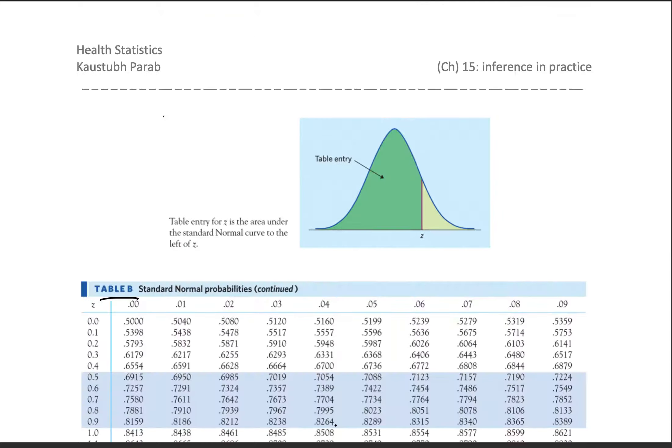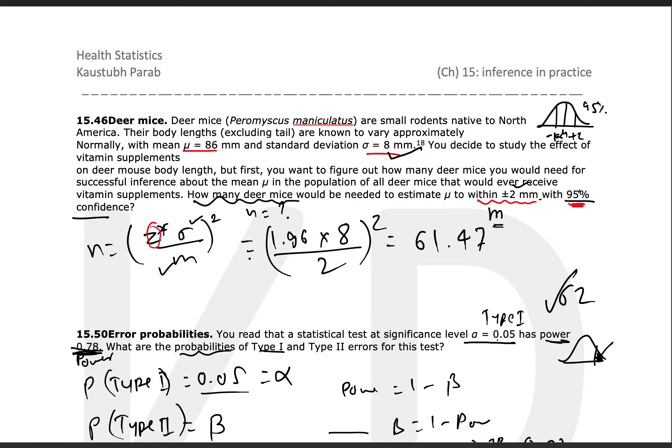61.47—that means you can say that you need at least 62 deer mice to calculate 95% confidence with this much margin of error. So that's your answer.